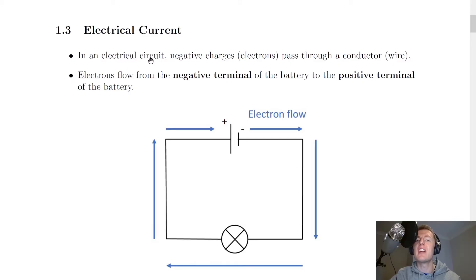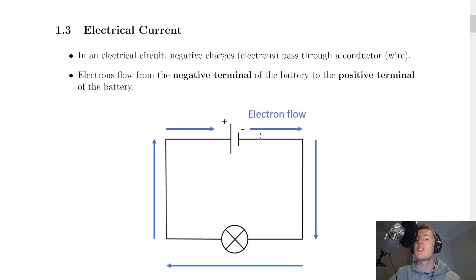In an electrical circuit, negative charges — i.e. the electrons — pass through a conductor, which is the wire. So in order to have a flow of electrons in a circuit, we need to have wires, usually made of copper. Electrons flow from the negative terminal of the battery to the positive terminal of the battery.